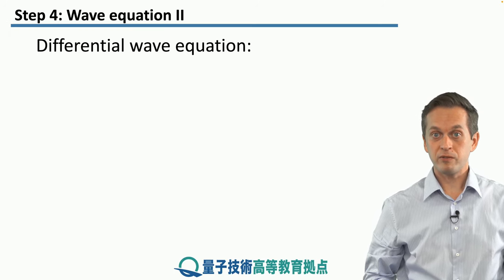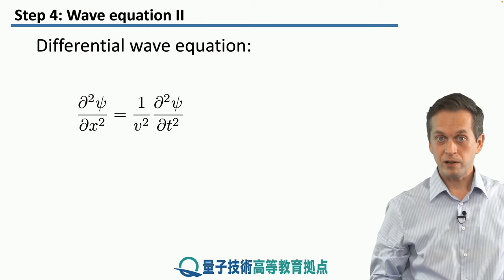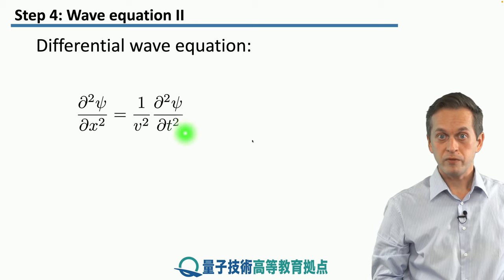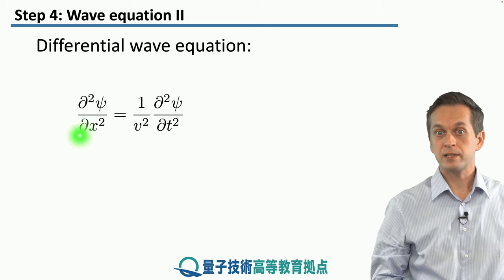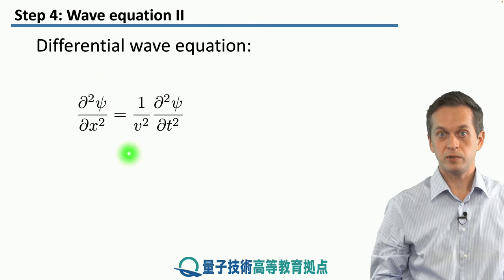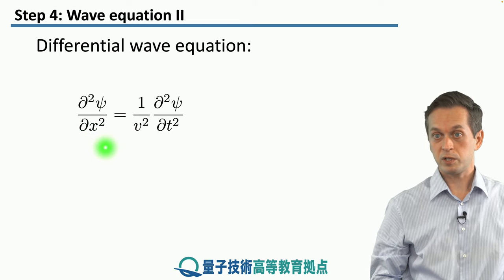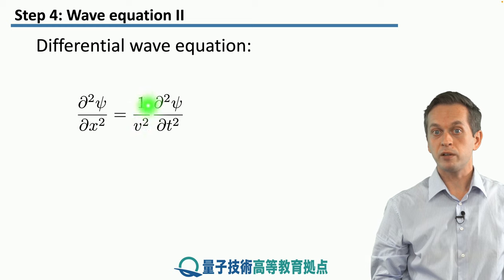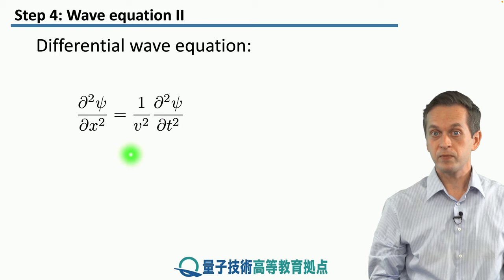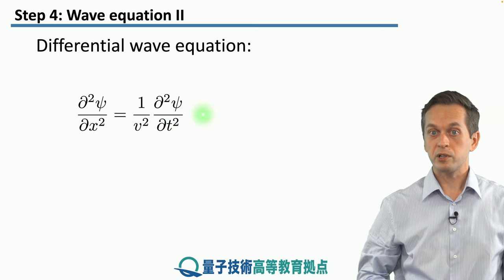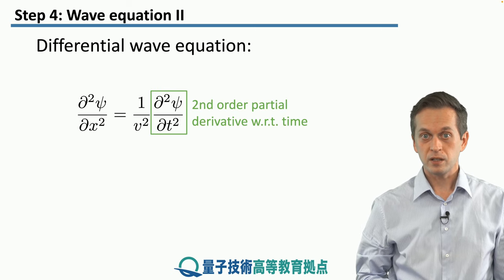So the differential wave equation in one dimension looks like this. It's short, but it's very loaded with notation. So we've got our wave psi, and any wave has to satisfy the following relationship. The second partial derivative of psi with respect to x, so with respect to the spatial coordinate, has to be equal to one over v squared, where v is the speed of the propagation of the wave, times the second partial derivative of psi with respect to time. So that's that.